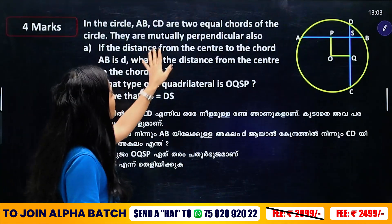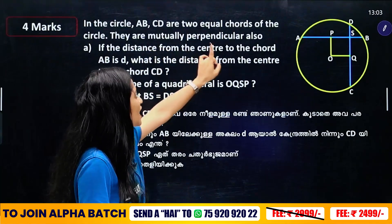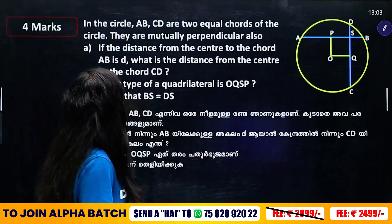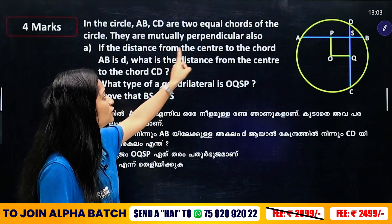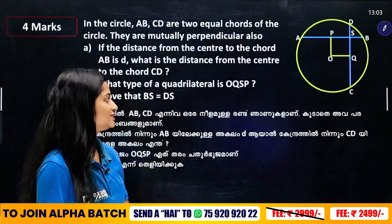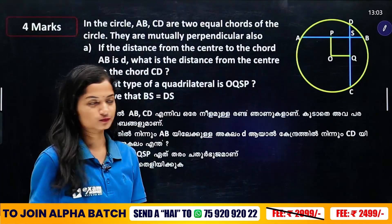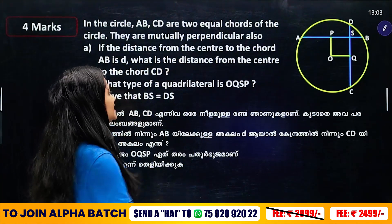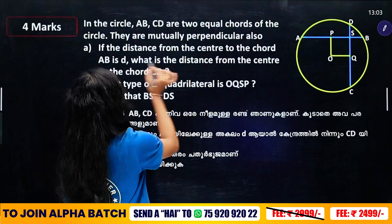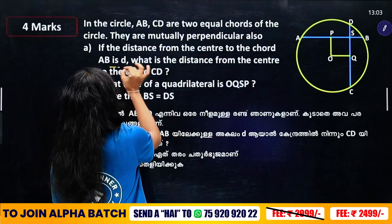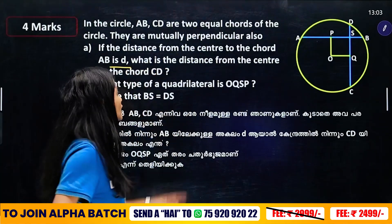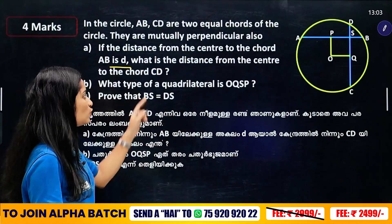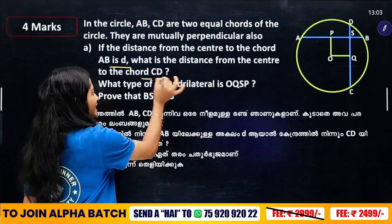In the circle, A, B, C, D are two equal chords of the circle. They are mutually perpendicular also. So if the distance from the center to the chord AB is D, what is the distance from the center to the chord CD?